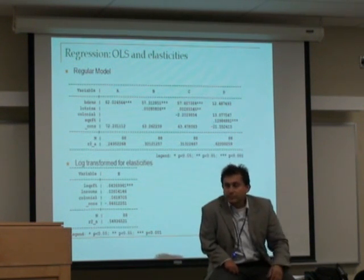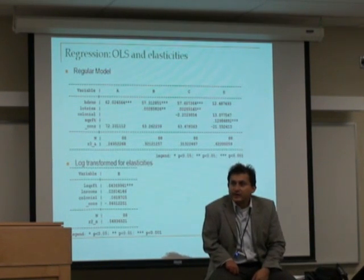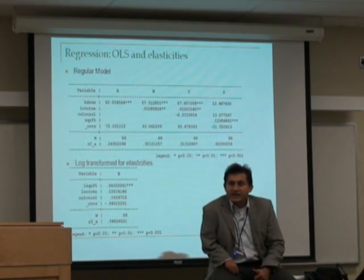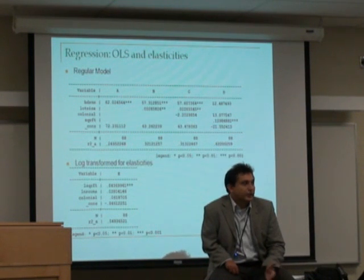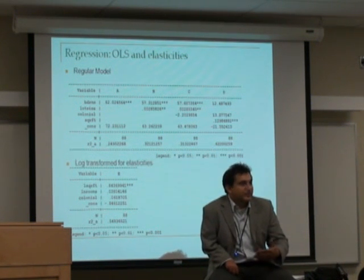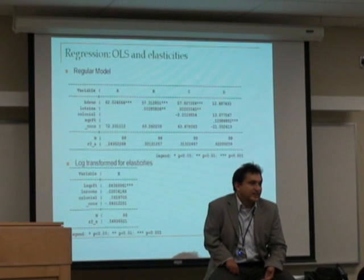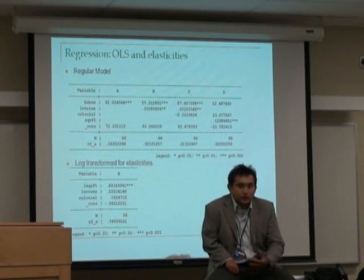To give you an example, public transit ridership in North America—the rule of thumb is that the relationship is negative 0.3. That is, a percentage increase in public transit fare is associated with 0.3% decline in transit ridership in the short run.